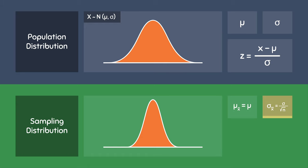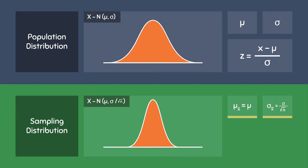The standard deviation of a sampling distribution is also called the standard error. So when a random variable x-bar follows a normal distribution with a mean mu and a standard deviation of sigma over the square root of n, we can write this as a notation to formally state that. And finally, the standardization formula for a sampling distribution is equal to an observation x-bar minus the population mean mu of all the x-bars — which is just equal to mu — divided by the standard deviation, which is equal to sigma divided by the square root of n.